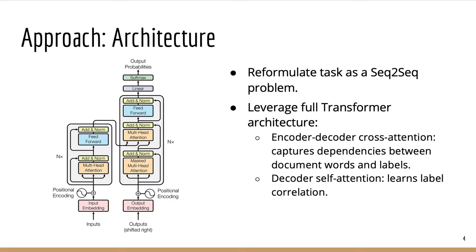These two ideas can be naturally implemented in the full transformer architecture. If we consider the document as an input sequence and labels as an output sequence, then encoder-decoder cross-attention will capture the dependencies between document tokens and labels, and decoder self-attention will learn the label correlation.